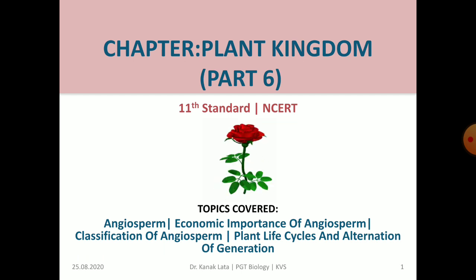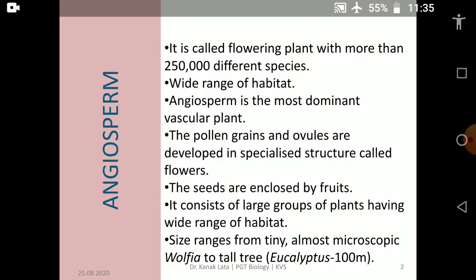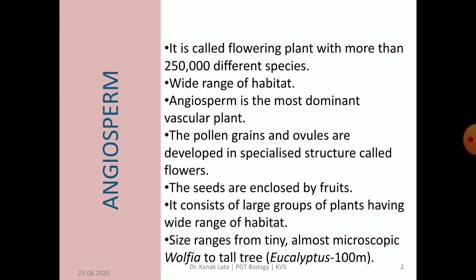Let us start the session with characteristic features of angiosperm. The term angiosperm means enclosed seeds, because ovules or seeds are enclosed within the ovary. Angiosperms are considered as most highly evolved and advanced plants. They are called flowering plants with 2,50,000 different species. Angiosperms are located in a wide range of ecological habitats and they are the most dominant vascular plant.